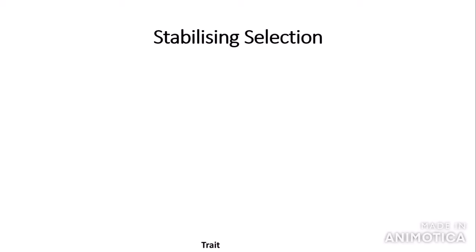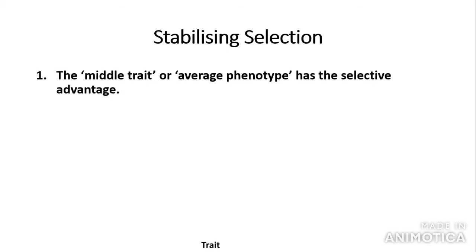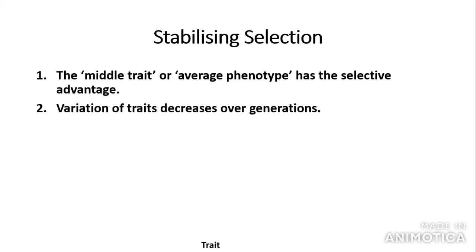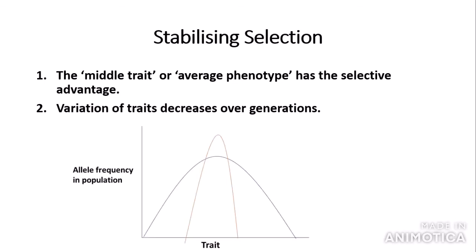The next type of selection is stabilising selection. Stabilising selection is when the middle trait, or the average phenotype, has a selective advantage. This means that the variation of traits decreases over generations. The blue curve represents the allele frequency before selection has occurred. On either side we have the extreme phenotypes — for example, a very low birth weight and a very high birth weight. The average birth weight is advantageous as it decreases the possibility of health complications, meaning organisms with this trait are more likely to survive and reproduce, passing the allele to offspring so the allele frequency increases, and the curve becomes more narrow.